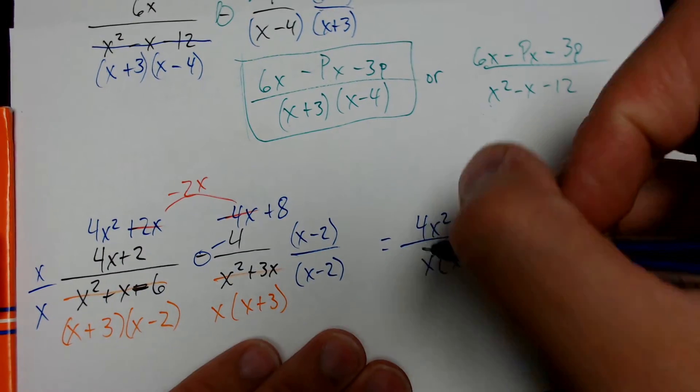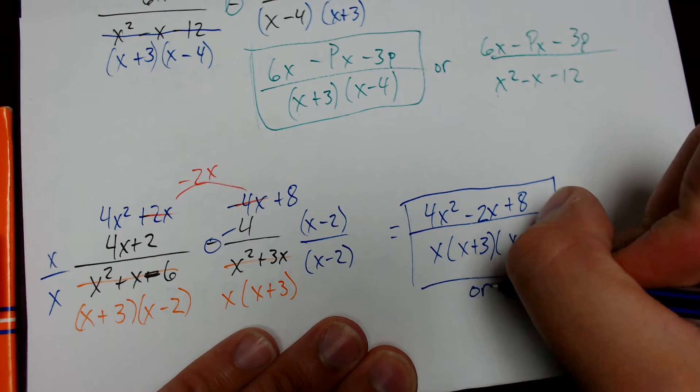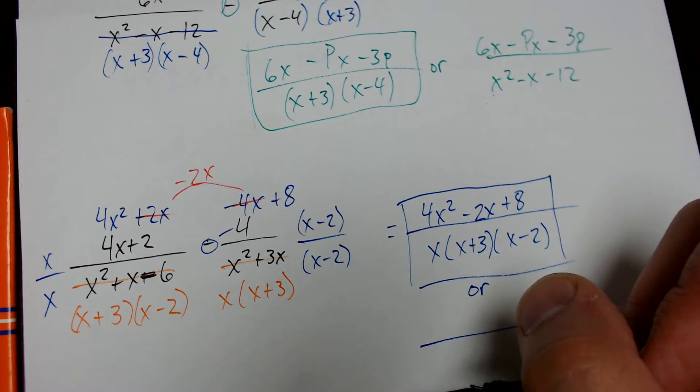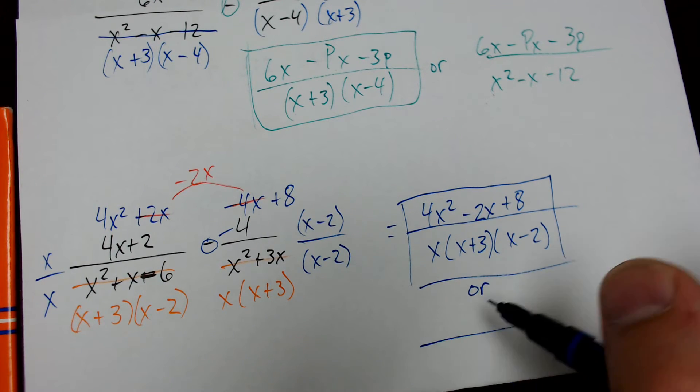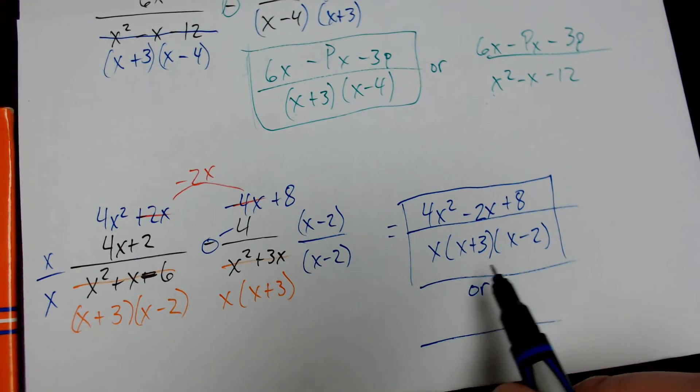And, again, like I said before, you can leave your denominator factored. I'm okay with that. Or, the book will sometimes give you the answer. You know, actually, no. This time, the book left the denominator factored. You know what? Just leave the denominator factored like this.